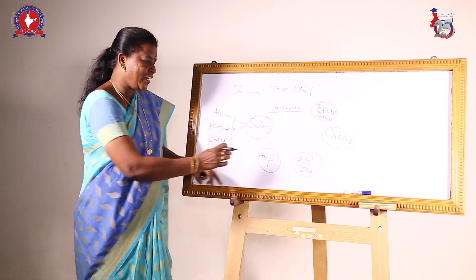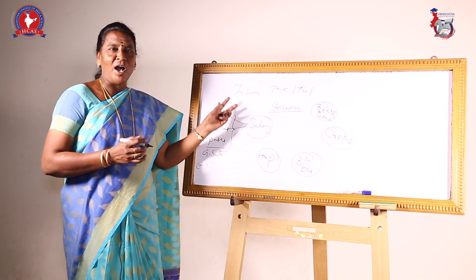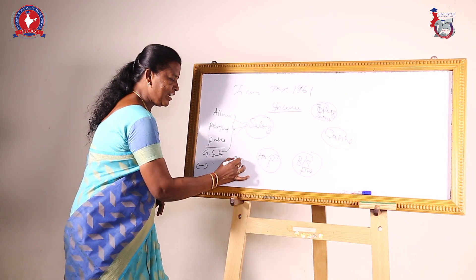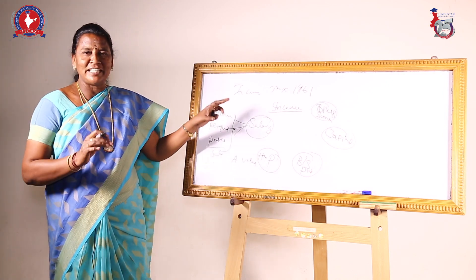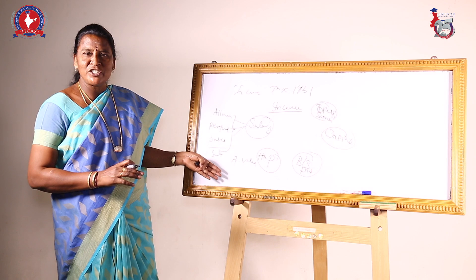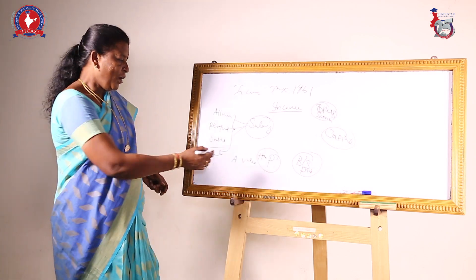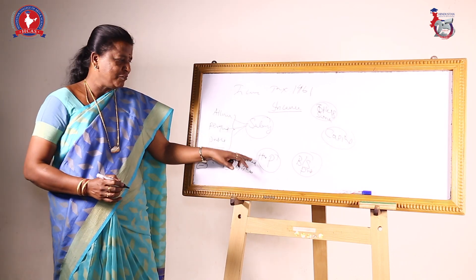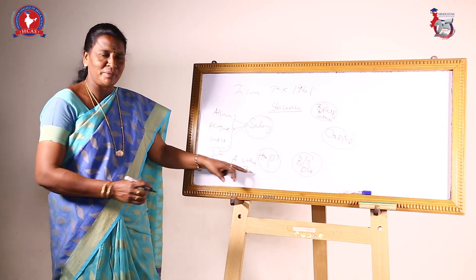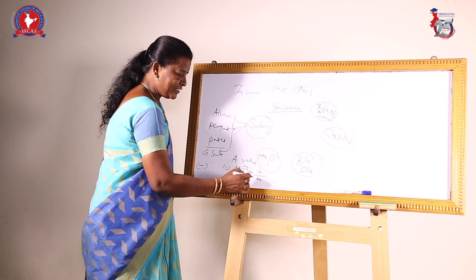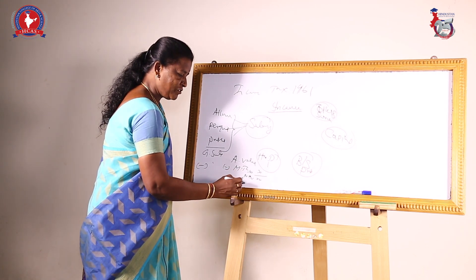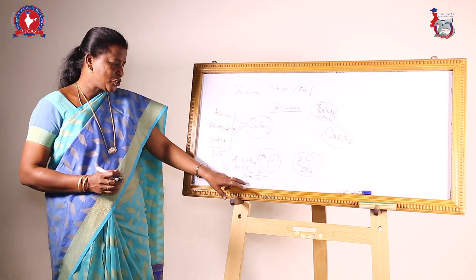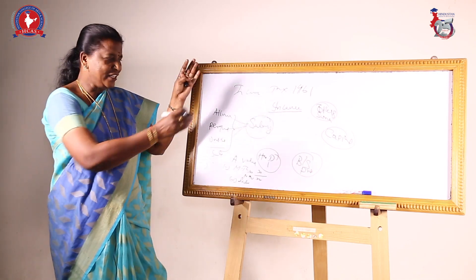Next, we move to the second head: house property. The rent received from house property is treated as annual value. There are different methods to determine the annual value. From the annual value, municipal tax is deducted to get the net annual value. From the net annual value, 2 deductions are allowed — standard deduction and interest on borrowed capital — to arrive at income from house property.